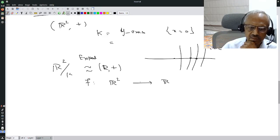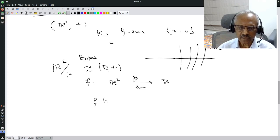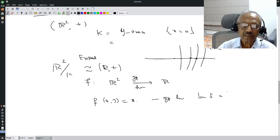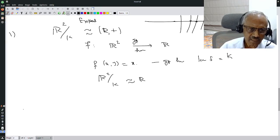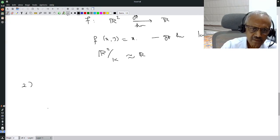How do I prove that? It simply says look for a group homomorphism R² to R so that the kernel should be the y-axis, namely x equal to 0. So what is the obvious choice? Let us look at F of (x,y) equal to x itself. This is a group homomorphism and kernel of F is my K. Therefore I know R² mod K is isomorphic to R. This is one example.